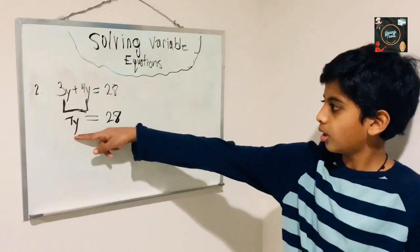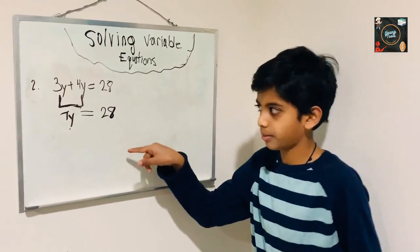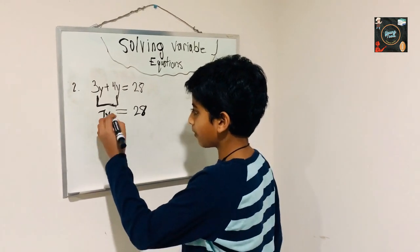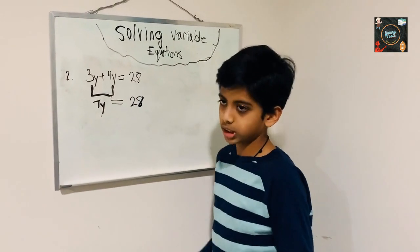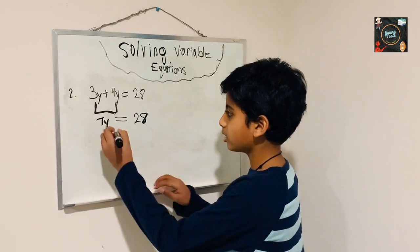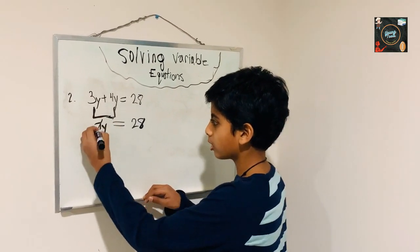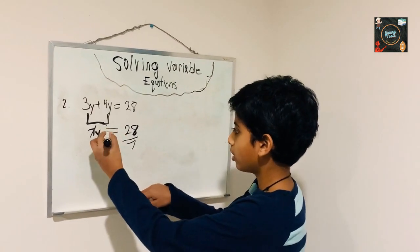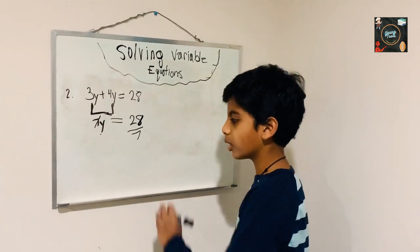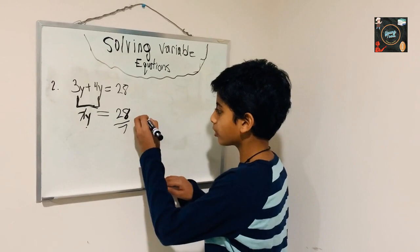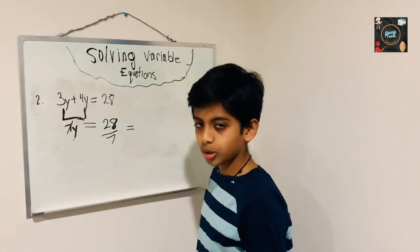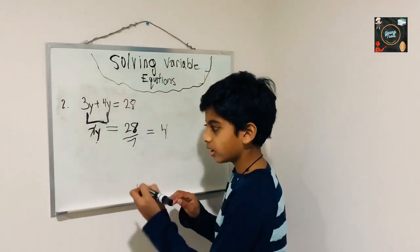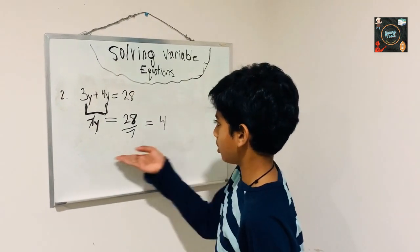So we get 7y equals to 28. Now, like the last equation, since 7y means 7 times y, what we need to do is divide — we take the 7 and divide 28 by 7. So our equation is saying y equals to 28 divided by 7. Now let's solve: 28 divided by 7 is 4, so our solution is y is equal to 4.